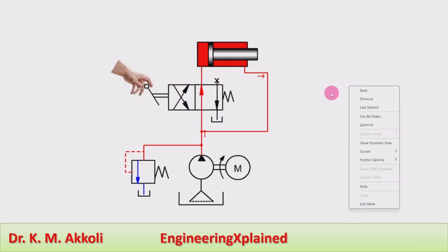When the direction control valve switches to its right envelope, then the fluid from the pump is flowing through the direction control valve to the piston end of the cylinder.